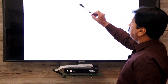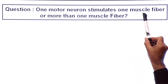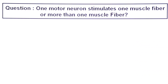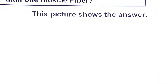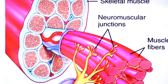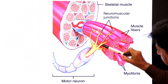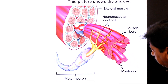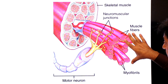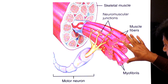Now there is a question: does one motor neuron stimulate one muscle fiber or more than one muscle fiber? The answer comes from this picture. Here you see a single motor neuron has several branches, which means one motor neuron can control more than one muscle fiber. Actually, one motor neuron controls a group of muscle fibers.